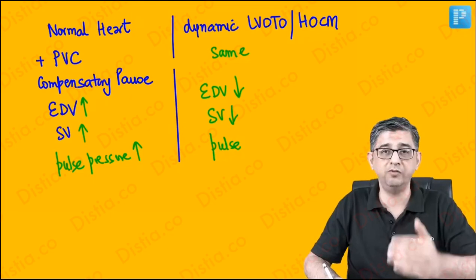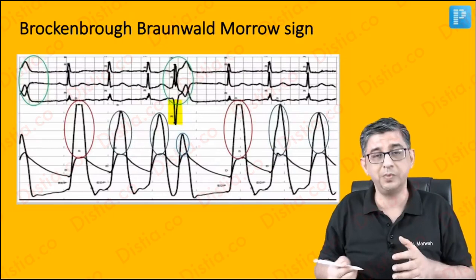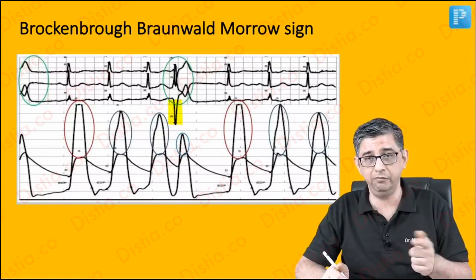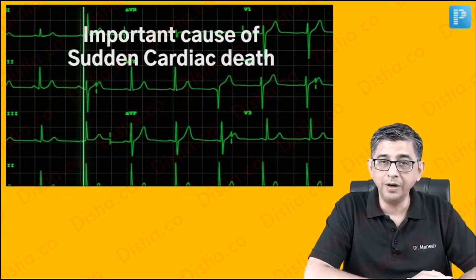Unlike a normal person — where following a PVC you would see an upgrade in pulse pressure — in this patient following a PVC you see the opposite: a decrease in pulse pressure. And that is what is shown in this tracing. In the upper part you can see the ECG with the premature ventricular contraction highlighted in yellow, and you will notice that the subsequent pulse tracing shows a reduction in pulse pressure compared to the previous beat.